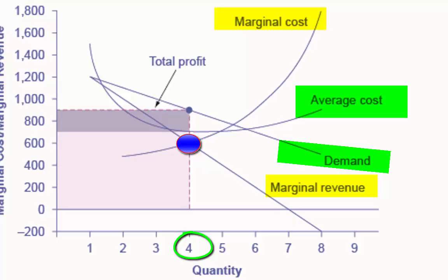The large box with quantity on the horizontal axis and marginal revenue on the vertical axis shows total revenue from the firm. Total costs for the firm are shown by the lighter shaded box, which is quantity on the horizontal axis and marginal cost of production on the vertical axis.